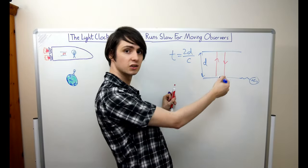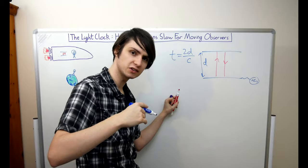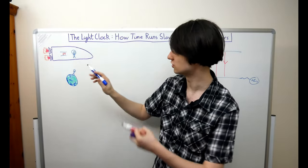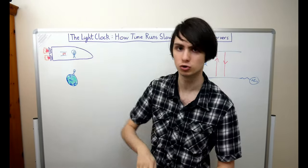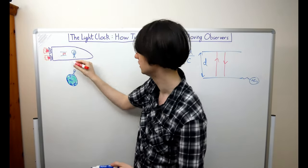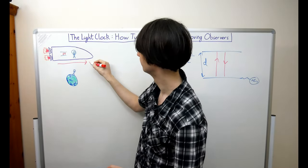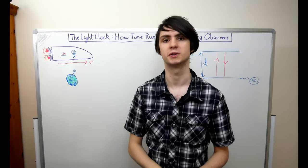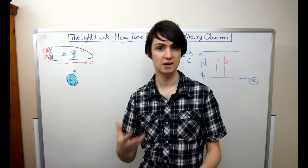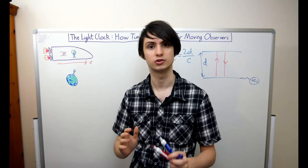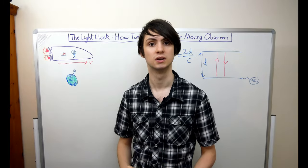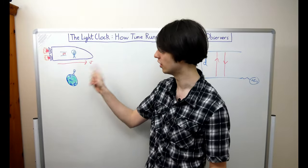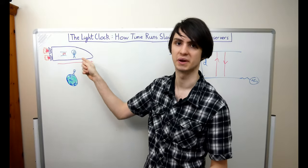All of this is nice and simple, but now let's introduce a new observer watching the spaceship from earth who sees the spaceship zoom past at some constant velocity which we'll call v. Now let's make a crucial assumption: let's assume that the speed of light in a vacuum is a constant for all observers. If this is the case then what does the observer on earth see happen inside the spaceship?